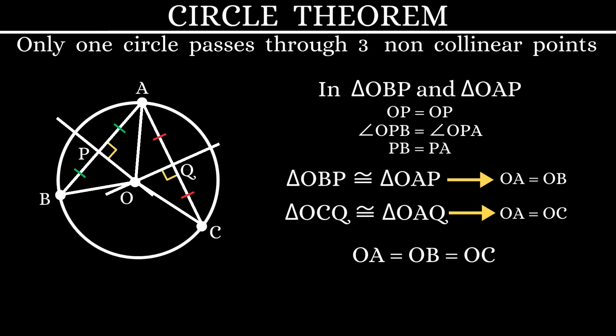One more point to note here is we have only one point of intersection of the two perpendicular bisectors. That means we can have only one point which is equidistant from all the three non-collinear points.